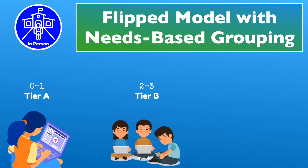Students in Tier B work with a partner or in small groups to refine some skills and concepts together. They use the teacher or the video lesson as a resource. After about 30 minutes in Tier B, students take another formative assessment. Those answering 80% of the questions correctly move to Tier C. Students remaining in Tier B continue working with partners or groups with the teacher helping as needed until they complete the next formative assessment.